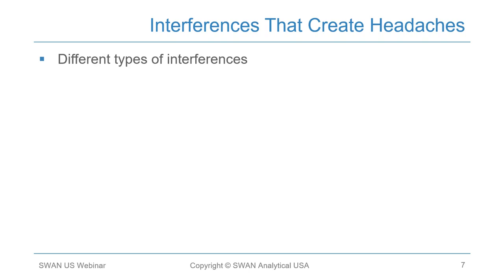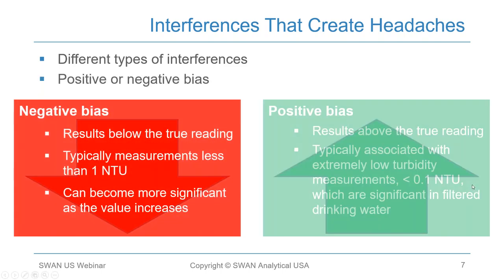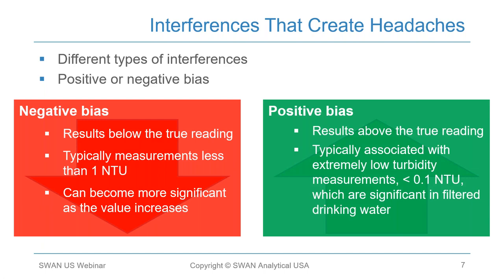Turbidity measurement is subject to various interferences, and all manufacturers work to address these in their instrument designs. These designs primarily help reduce headaches for the end user, and how manufacturers address these issues can make a huge difference in long-term cost of ownership. Turbidity interferences cause either a positive or a negative bias. Negative bias — where measurement falls below the true value — is typically associated with measurements greater than 1 NTU. Positive bias — measurement above the true reading — is typically associated with extremely low turbidity measurements, less than 0.1 NTU, significant in filtered water.